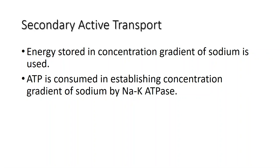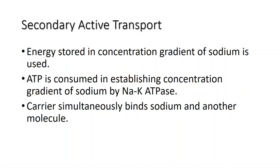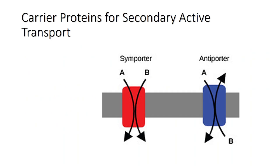In secondary active transport, a carrier protein simultaneously binds to sodium and another substance, then changes its shape so that both substances cross the membrane at the same time. The carrier proteins used in secondary active transport are also known as transporters and are of two types: a symporter carries two different ions or molecules both in the same direction, while an antiporter also carries two different ions or molecules but in opposite directions.